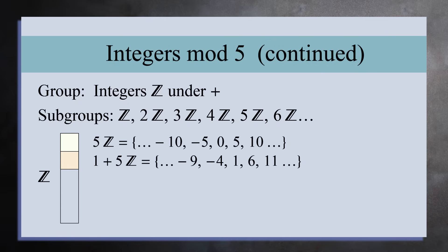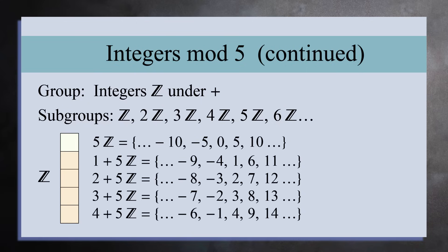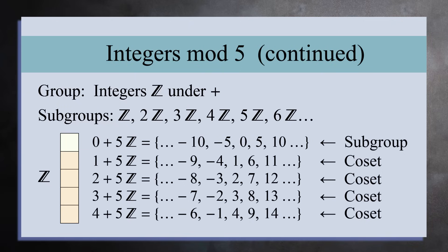We can continue this process by picking a number not already inside a rectangle, like 2, and then making a new coset, 2 plus 5Z. Continuing this process, we get the cosets 3 plus 5Z, and then 4 plus 5Z. At this point, the original group is now completely covered by 1 subgroup 5Z, and 4 cosets. By the way, you can also think of the subgroup as a coset, 0 plus 5Z.